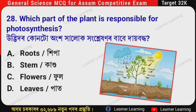Next question: Which part of the plant is responsible for photosynthesis? (Assamese: Udhvidar konto ongo halok hongleksonor bhaabhe dhai buddha?) The correct option is Option D — Leaf (path). The photosynthesis process occurs in the leaves of a plant.